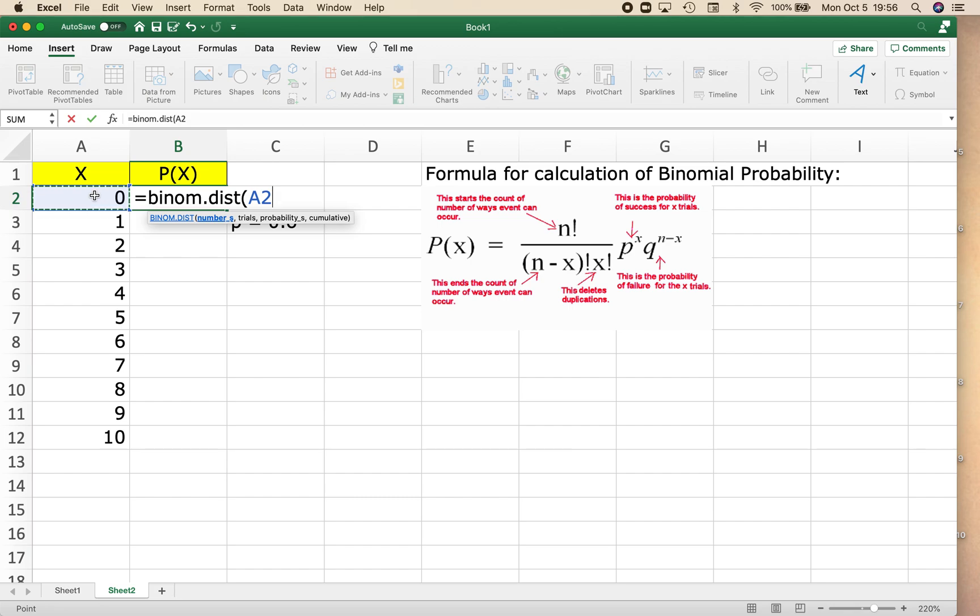So I'm going to click on the success of 0. I want to know the probability of 0 successes. Then I'm going to hit the comma, and I'm going to enter in how many trials am I doing. I am conducting 10 trials for this particular binomial.